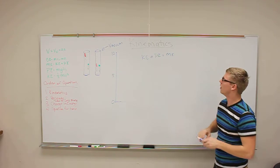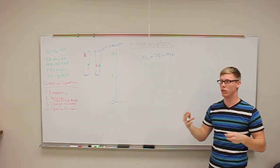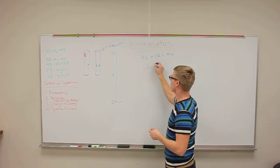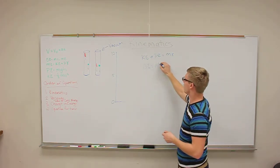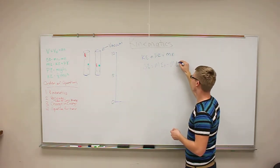So when we're looking at mechanical energy, we want to find, usually, the change in energy. So delta E, which represents the change in energy, equals mechanical energy of final minus mechanical energy of initial.